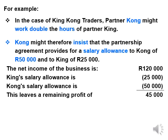That leaves a remaining profit of $45,000. Please note that the partner's salaries are not part of the profit calculation — they will not be a normal operating expense. They are paid out of the profits of the business. So we start off with the profit of $120,000, deduct the salary allowance of each partner, and that leaves us with a remaining profit of $45,000.